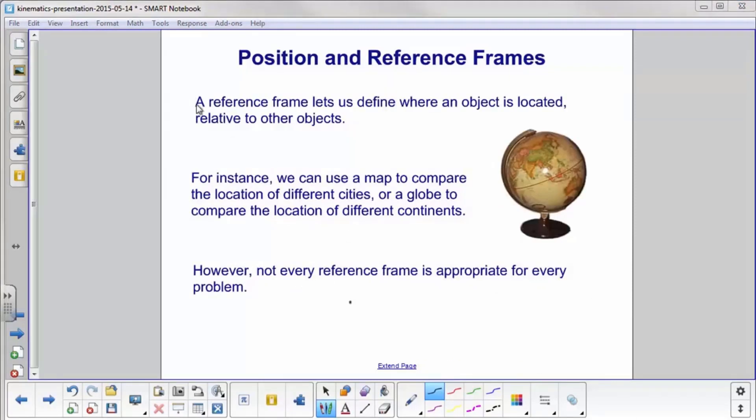A reference frame lets us define where an object is located, and we describe it relative to other objects. So the keyword here is relative to other objects. For example, we can use a map to compare the location of different cities. We can see New York City is east of San Francisco, or different continents. For example, we have China, and here we have Australia. So we can say Australia is south of China. However, not every reference frame is appropriate for every problem.